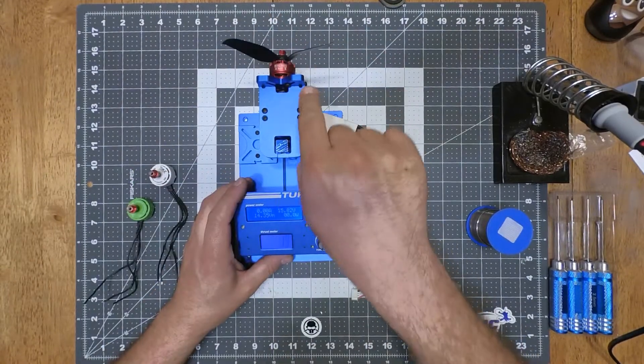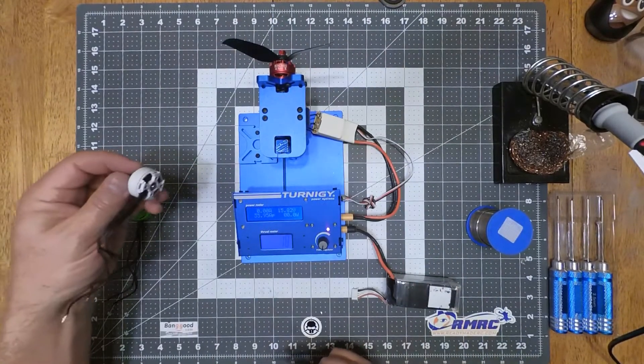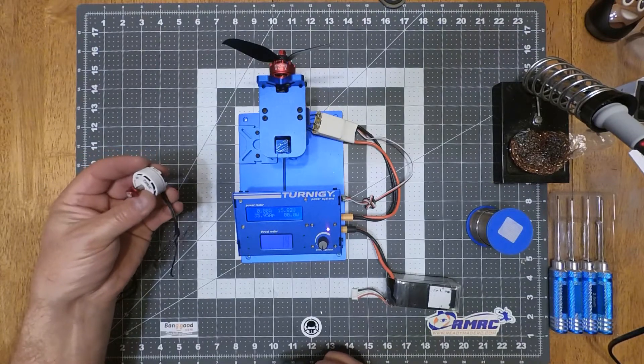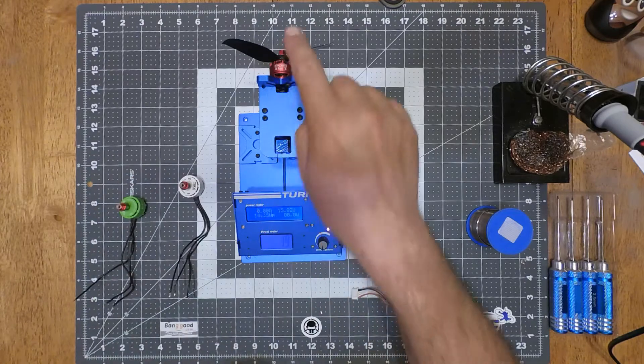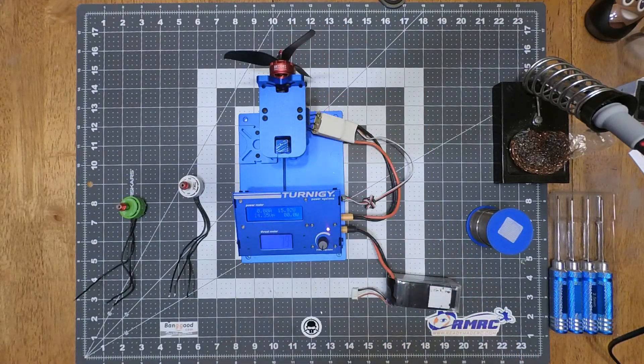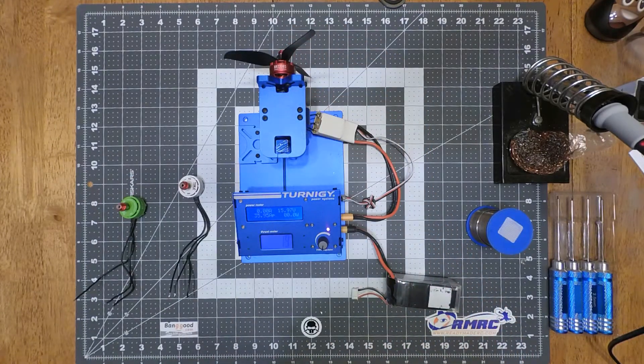This one's making more thrust than this one. And it's not a substantial amount. But for the dollar amount, you're better off buying the 2306 2400 kV.